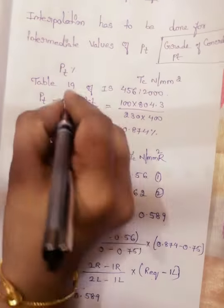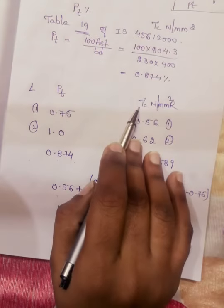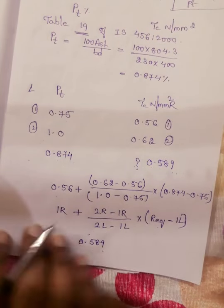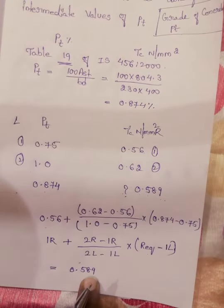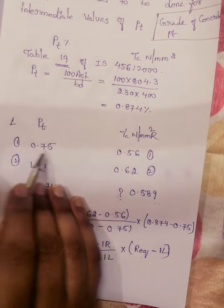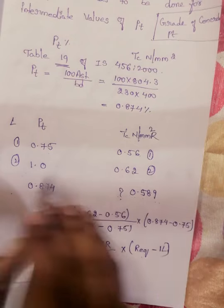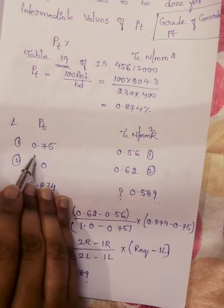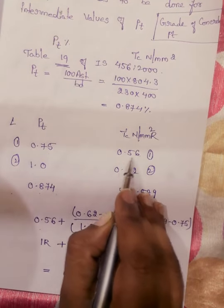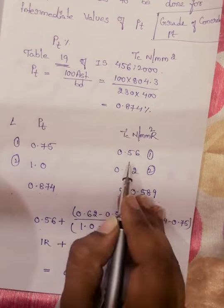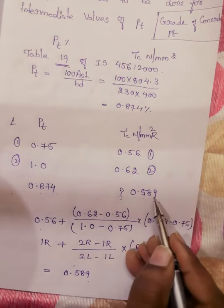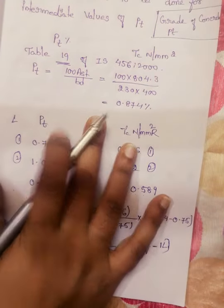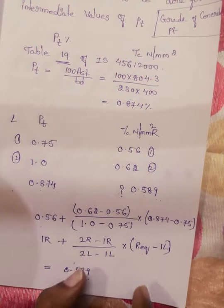We can cross-check this result: for PT = 0.75, tau_c = 0.56, and for PT = 1.0, tau_c = 0.62. Our required PT of 0.874 lies between these, so tau_c should lie between 0.56 and 0.62. We got 0.589, which indeed lies between these two values — confirming our interpolation is correct. This is how we find the design shear strength of concrete tau_c for required intermediate PT values.